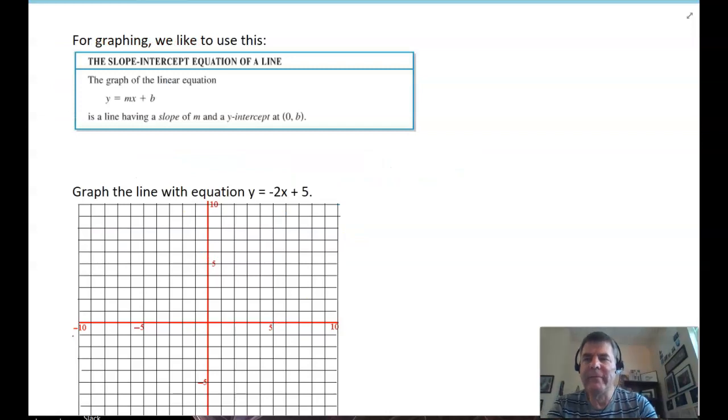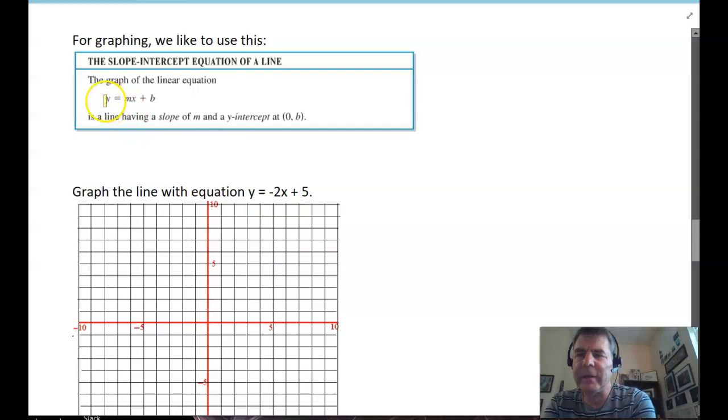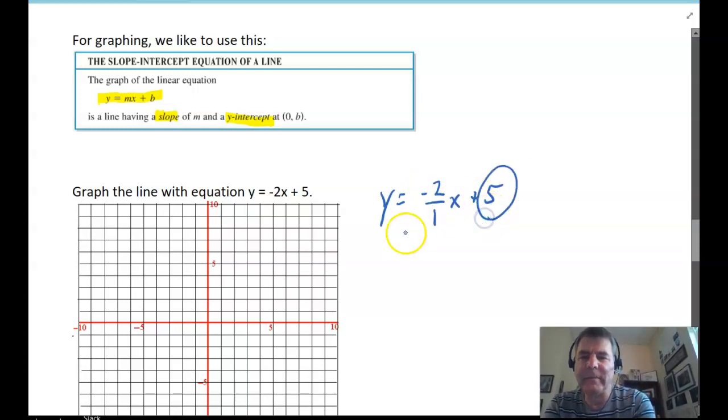Now, we can graph lines. And when we do that, we usually like to use this version of the linear equation. It's called the slope-intercept form. And it's y equals mx plus b. m is the slope of the line. And b is the y-intercept, the place where the line crosses the y-axis. So, if I have the equation y equals negative 2x plus 5, that's saying y equals negative 2 over 1x plus 5. That means my y-intercept is 5.